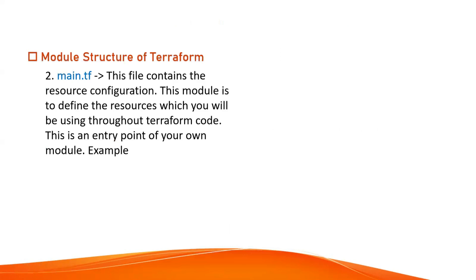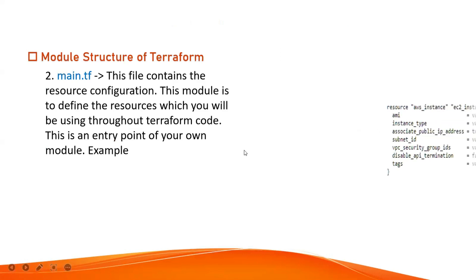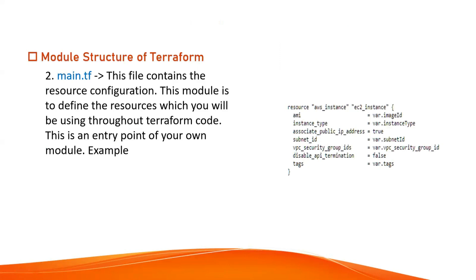Moving to the second file, which is main.tf — this is the entry point of your Terraform module. This file contains the resource configuration and defines the resources you will use throughout your Terraform code. For example, I have defined a resource called aws_instance for an EC2 instance, where I define the AMI, instance type, public IP address, subnet ID, VPC security groups, disable API termination, and tags. You might see var.imageID — var is simply a variable, which we will look at in the next few minutes.